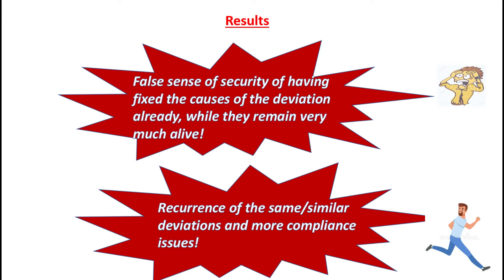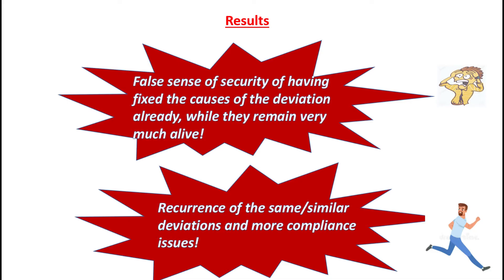When we run with the blanket root cause of human error and the blanket corrective action of retraining, we run two risks. First is the false sense of security of having already fixed the causes of the issue while they pretty much remain alive. The second is the recurrence of the same or similar deviations in the future, leading to more compliance issues. Obviously, we do not want either of those.